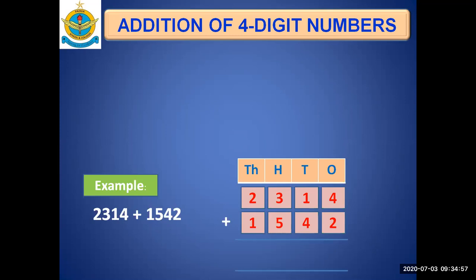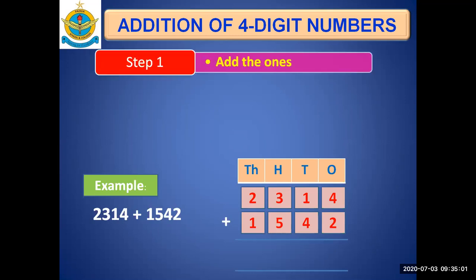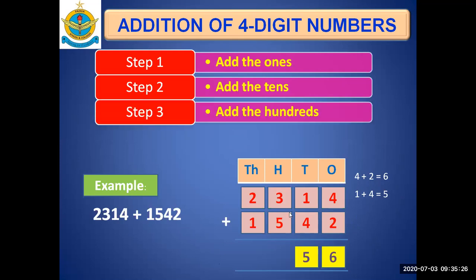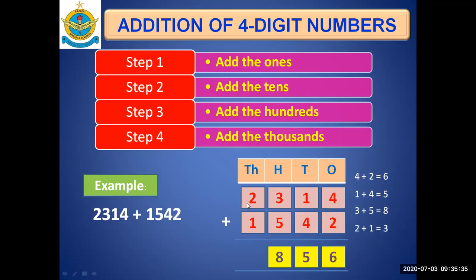Now let's revise the steps. Step one: add the ones — four plus two is six, write six down. Step two: add the tens — one and four gives five, write it down. Step three: add the hundreds — three plus five is eight, write it down. Step four: add the thousands and write the sum. You always start adding from the ones column.